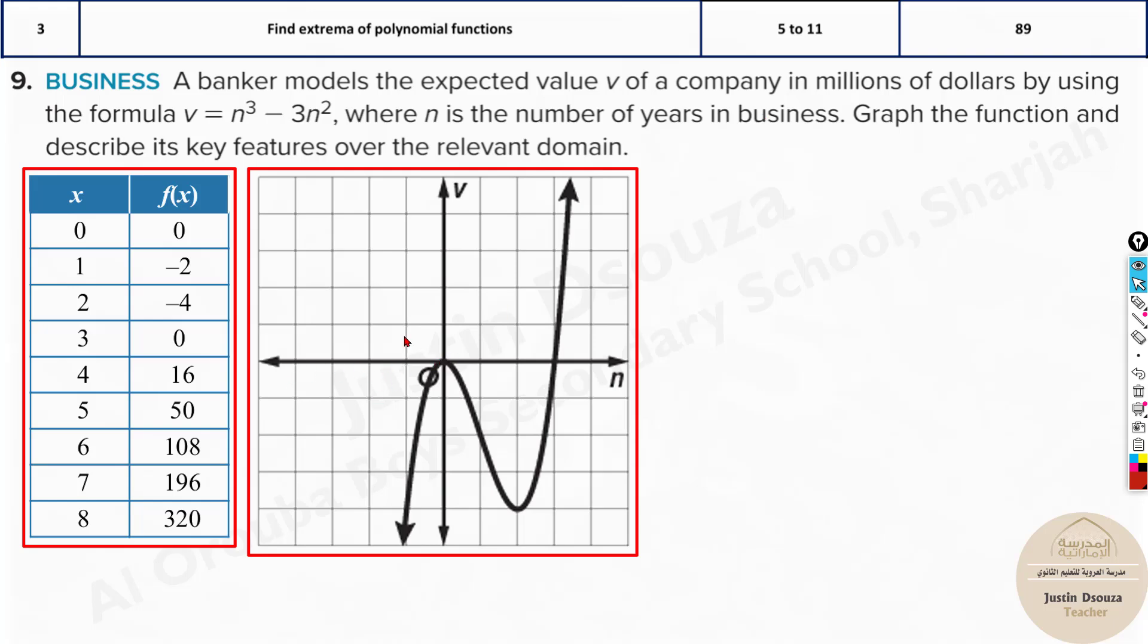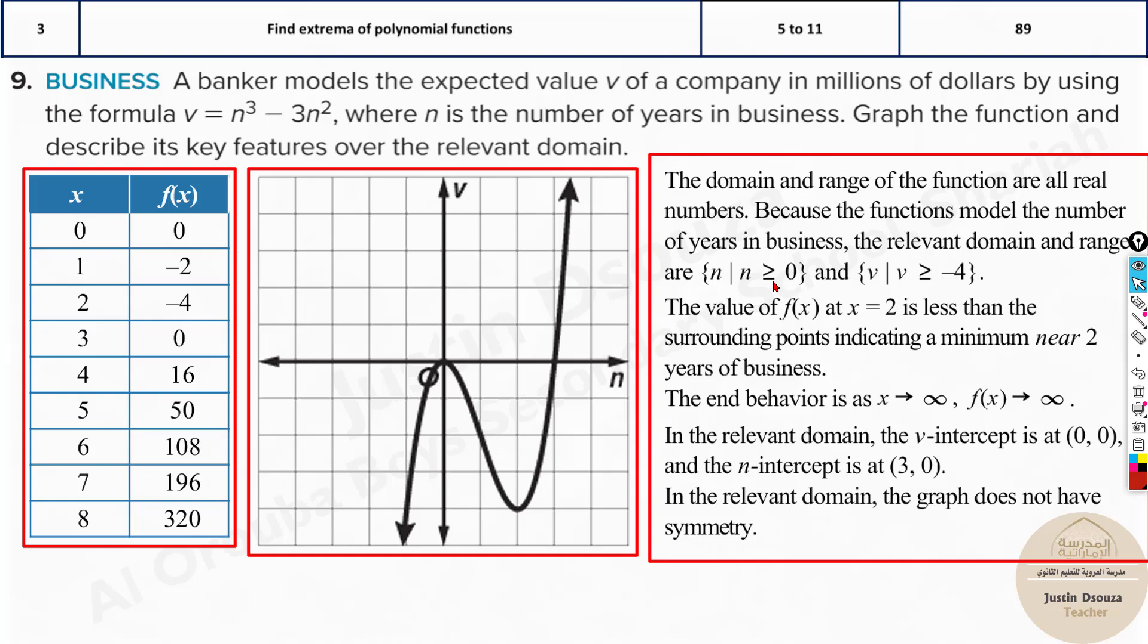Now since n is the number of years of business, you can't have any negative values. It's only from year 0, 1, 2, 3. You can see starting years it was struggling and then it started increasing its revenue. So from here, see the domain must be greater than or equal to 0. Why? Because you cannot have negative years. It's from when the business started, number of years.